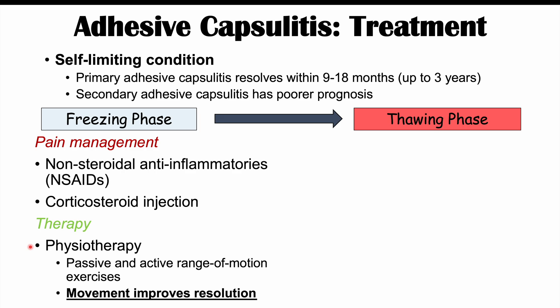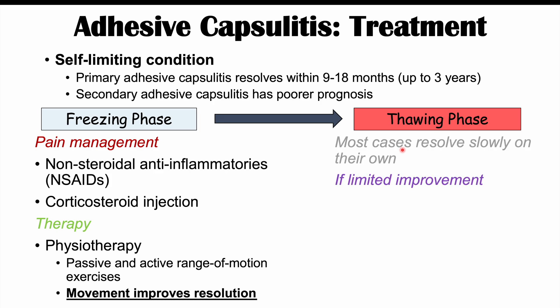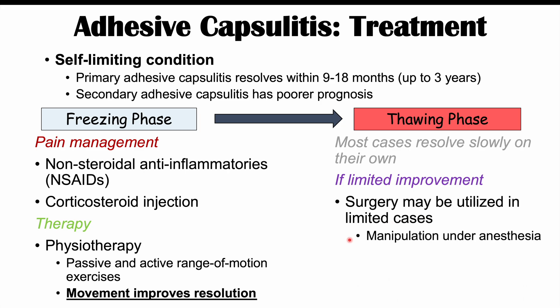During the thawing phase, most cases resolve slowly on their own. However, if there is limited improvement, surgery may be utilized. One surgical technique is manipulation under anesthesia, where the patient is put under anesthesia and the shoulder is moved rigorously to break the thickened shoulder capsule that prevents movement. Another technique is arthroscopic capsular release — also breaking through the thickened capsule to allow proper shoulder movement.